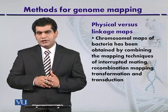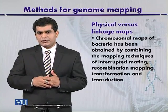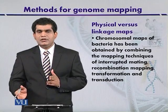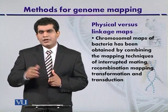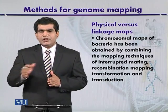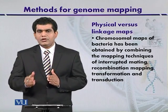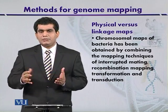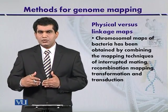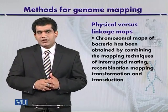Interrupted mating is a process by which the sequence of transfer of genes from donor to recipient can be studied after interrupting the mating process at different time intervals. We can study which gene is transferred at the next minute and which character is passed after which interval. This process is widely used to map the bacterial chromosome and to generate physical maps.